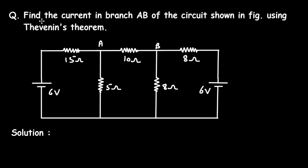Question: Find the current in branch AB of the circuit shown in the figure using Thevenin's theorem. Here, for this circuit, we have to find the value of this current — the current through this branch. That means we have to find the current through this 10 ohm resistance by using Thevenin's theorem.